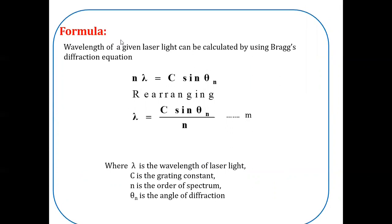Formula required to explain this. Wavelength of a given laser light can be calculated by using Bragg's diffraction equation. n lambda is the condition for constructive interference. It satisfies for the path difference c sin theta n. By rearranging this expression, we will get an expression for wavelength lambda. Lambda is equal to c sin theta by n.